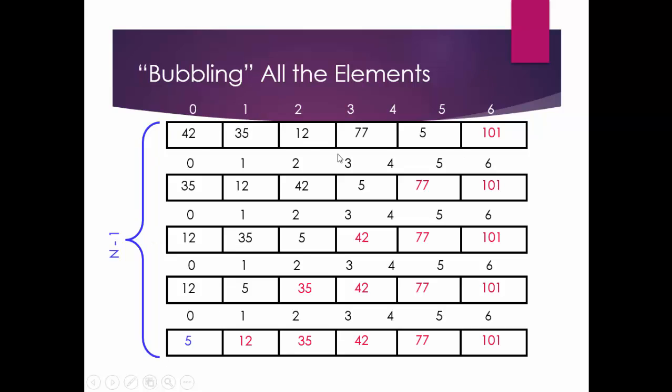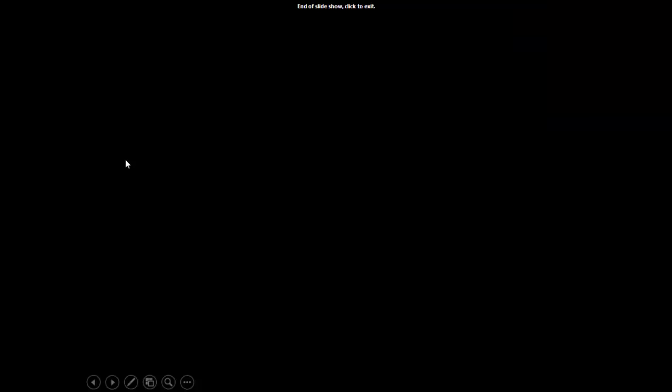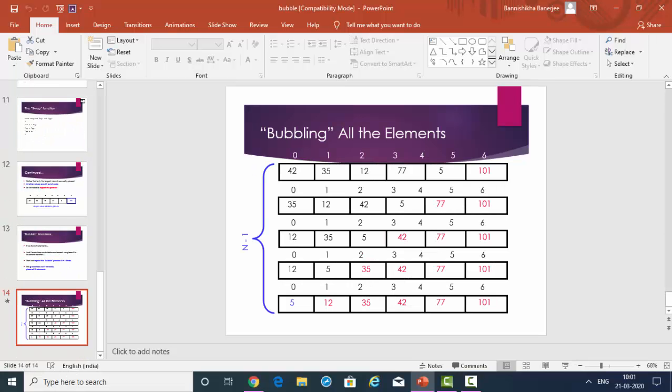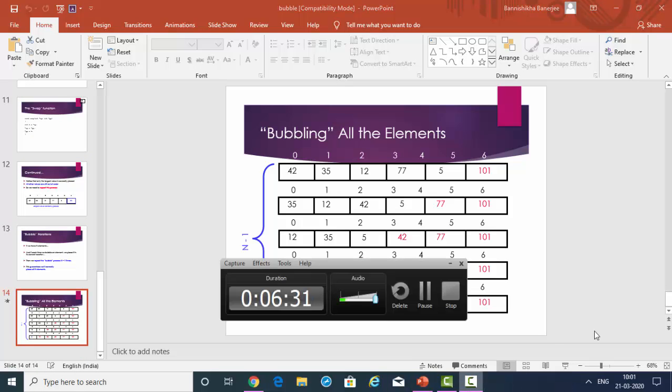So how many iterations did we need? n minus 1 iterations for n elements — remember that. Thank you for watching, hope you understood this lecture.